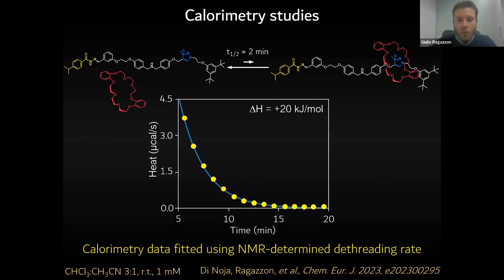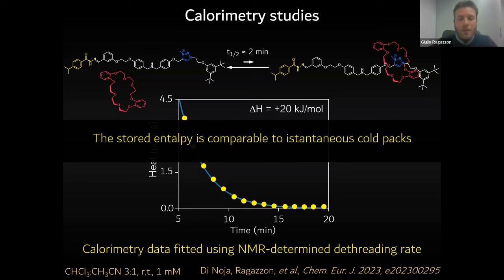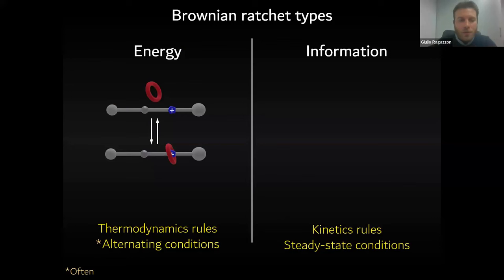The delta H we measure is 20 kilojoules per mole. One comparison is with instantaneous cold packs: the stored enthalpy value we measure is comparable to what is found in instantaneous cold packs. For the first time looking at an energetic property — not focusing on motion — we found a value comparable with something we are familiar with. This is an example of an energy ratchet: we have alternating conditions, and thermodynamics governs the behavior of the system.